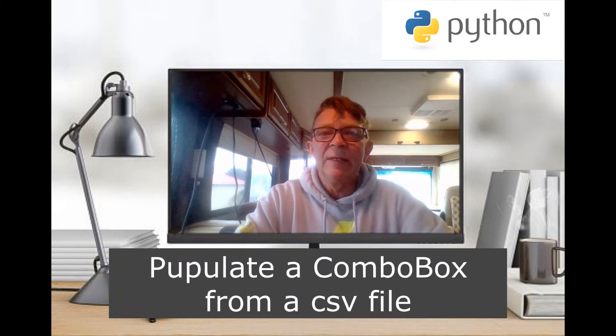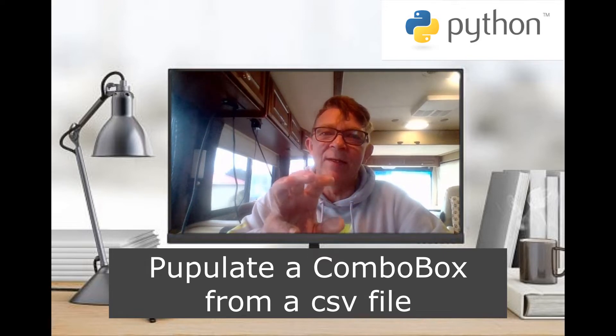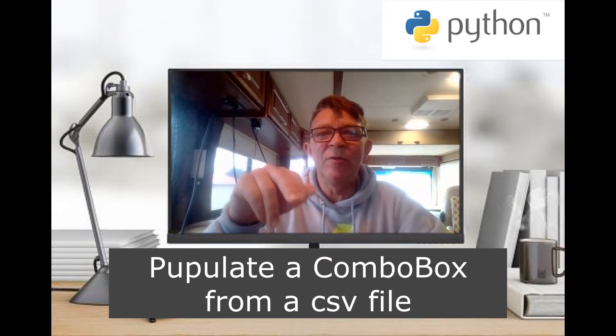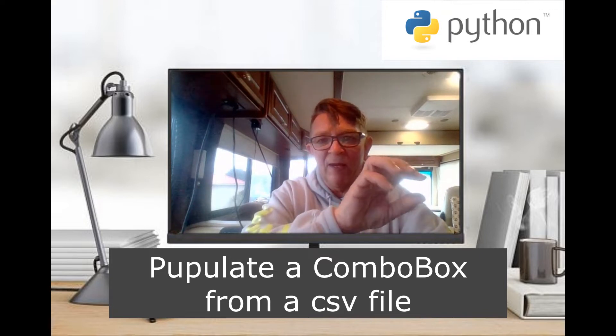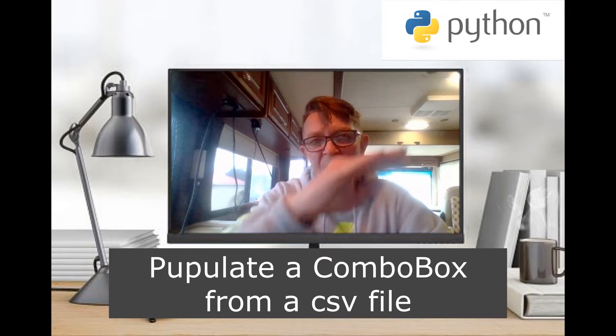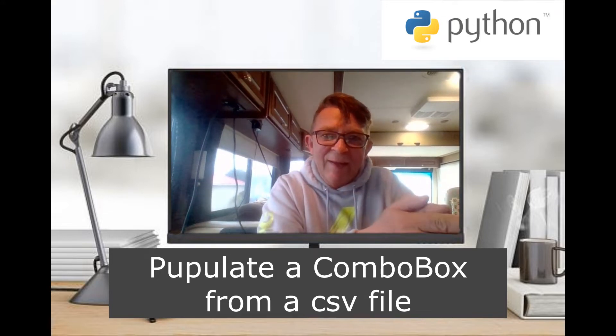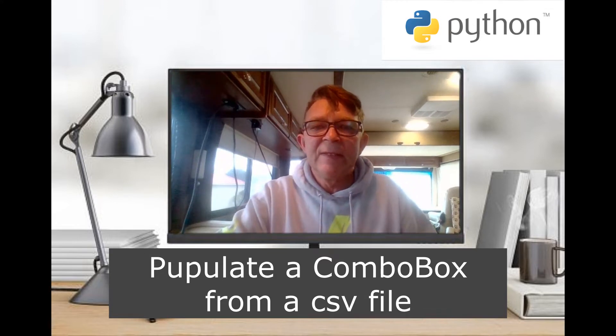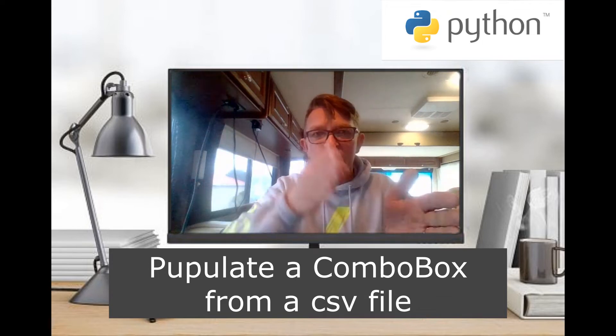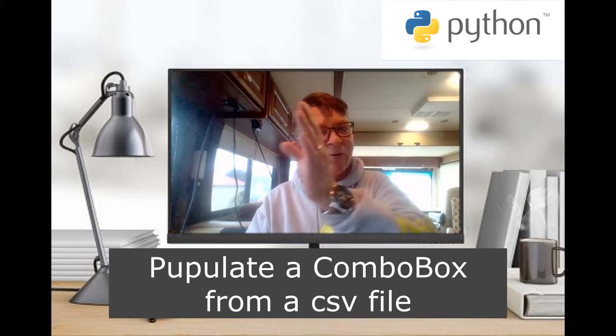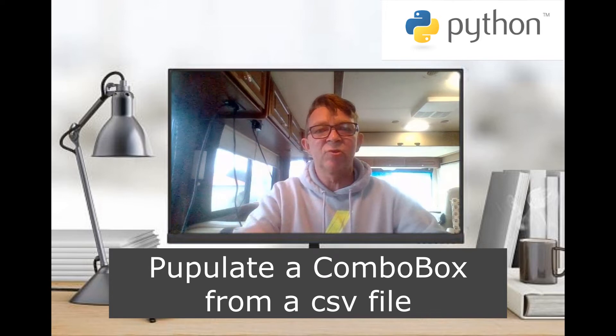Welcome to Python Learning by Doing. Today we look at a combo box — also called a drop-down menu. I made a little page in Qt Designer with a combo box, and when people click it, I want the selection options to be imported from a CSV file. I want to take values from column one and column three, combine them into a string, and use that as the choices in the combo box.